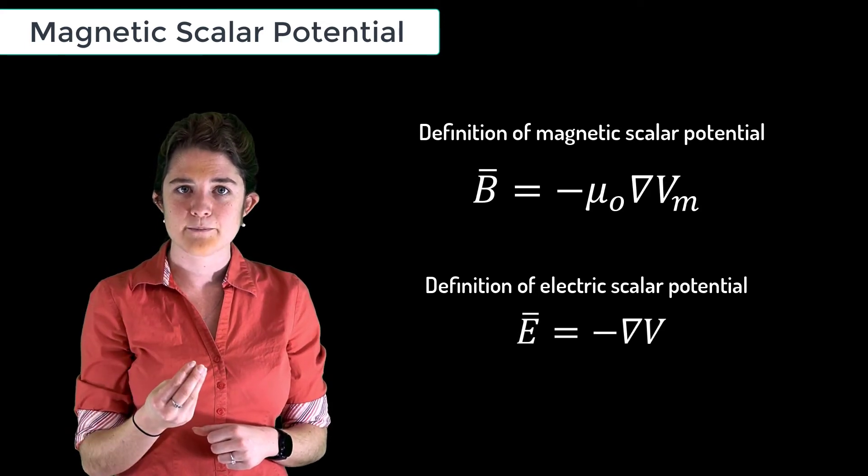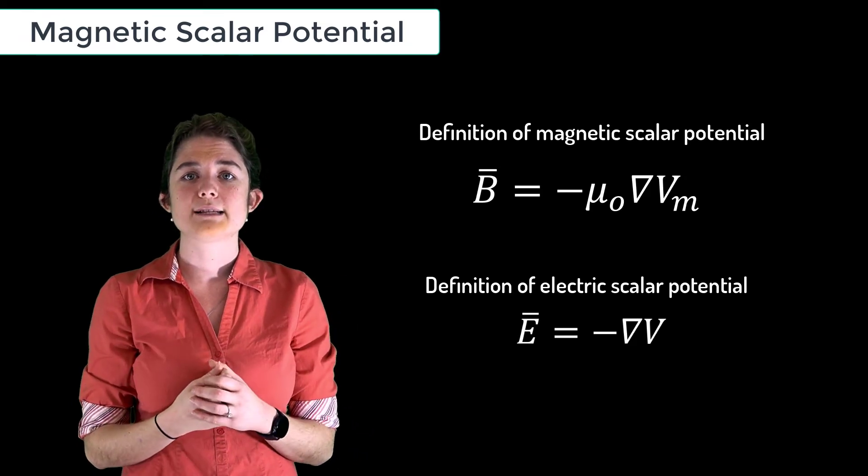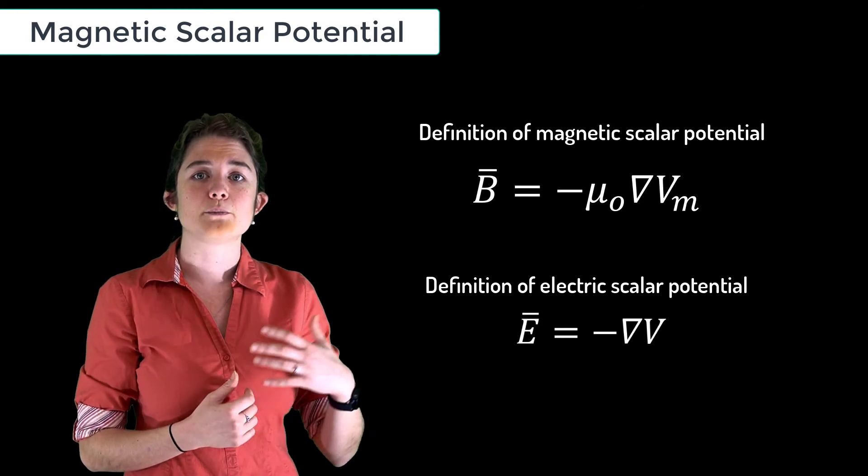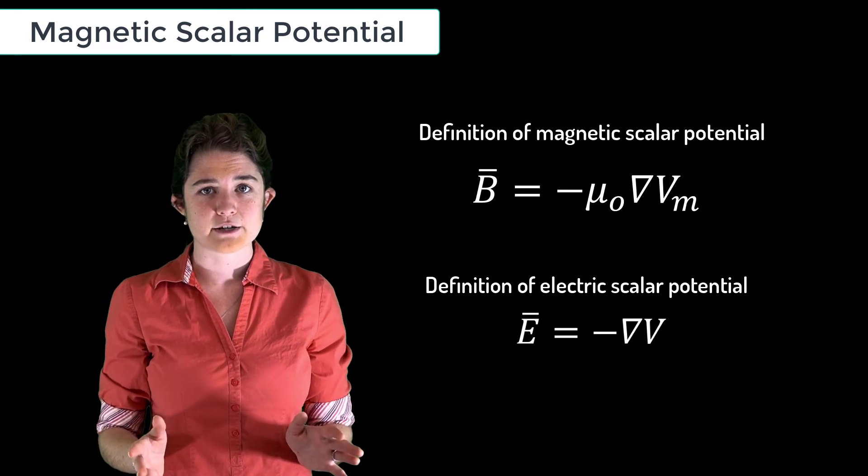Similarly, the magnetic voltage indicates the amount of energy a magnetic charge would gain by virtue of its location at a certain point in a magnetic field. There is no such thing as free magnetic charge,